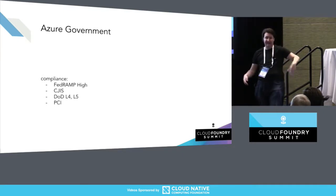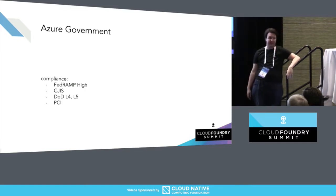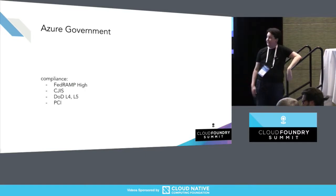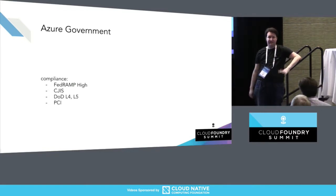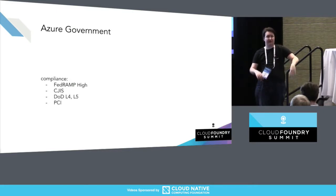Azure Government compliance is similar: FedRAMP high, DISA up to level five, PCI and CJIS compliance. Those non-FedRAMP compliance levels — PCI, CJIS, HIPAA — are also available in vanilla Azure as well. So if you don't need the full FedRAMP experience, you can also run on a regular Azure location.